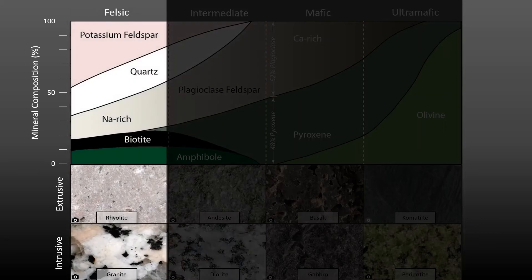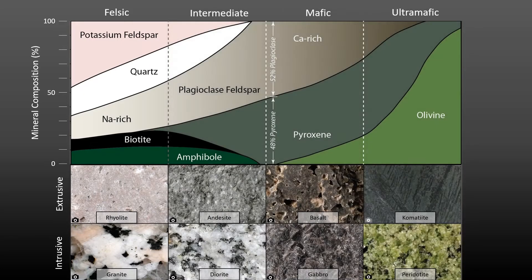Finally, there's the felsic group, which has even more sodium in the plagioclase, has almost no pyroxene, and has amphibole, biotite, quartz, and can have much more potassium feldspar. The felsic rocks tend to be very light in color, but not always. Okay, looking again at the chart as a whole, I hope you can see how each group is a range of compositions.